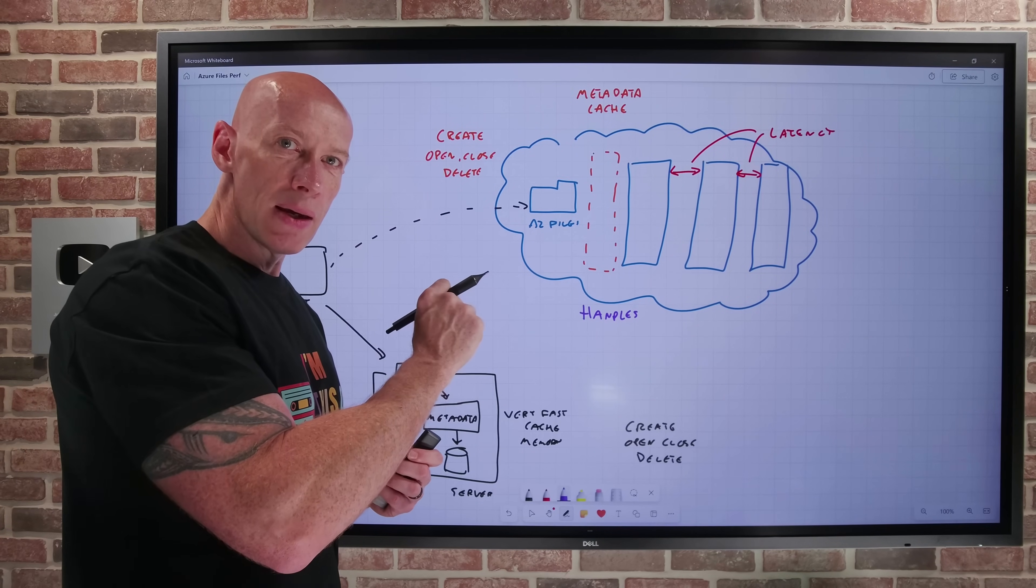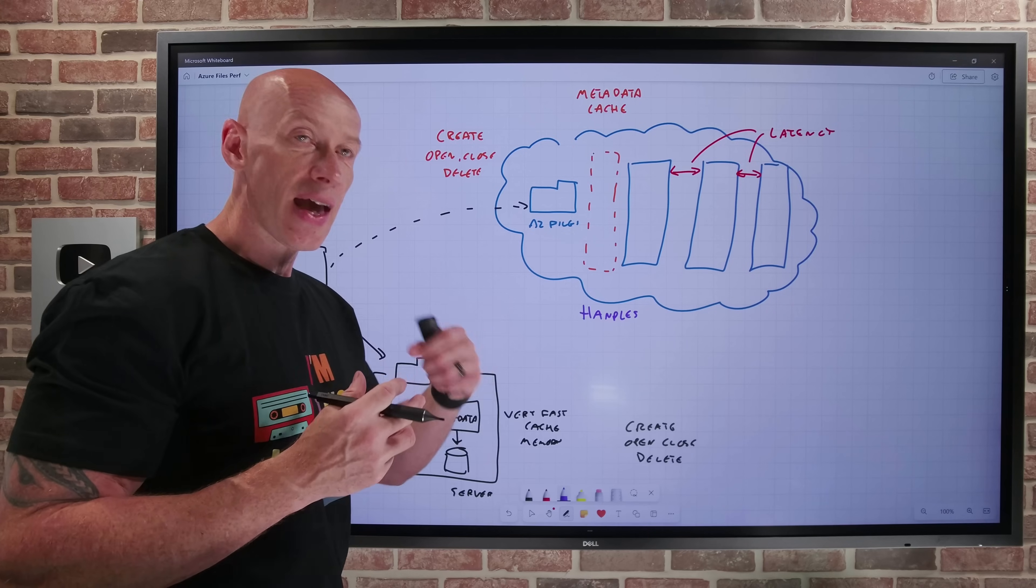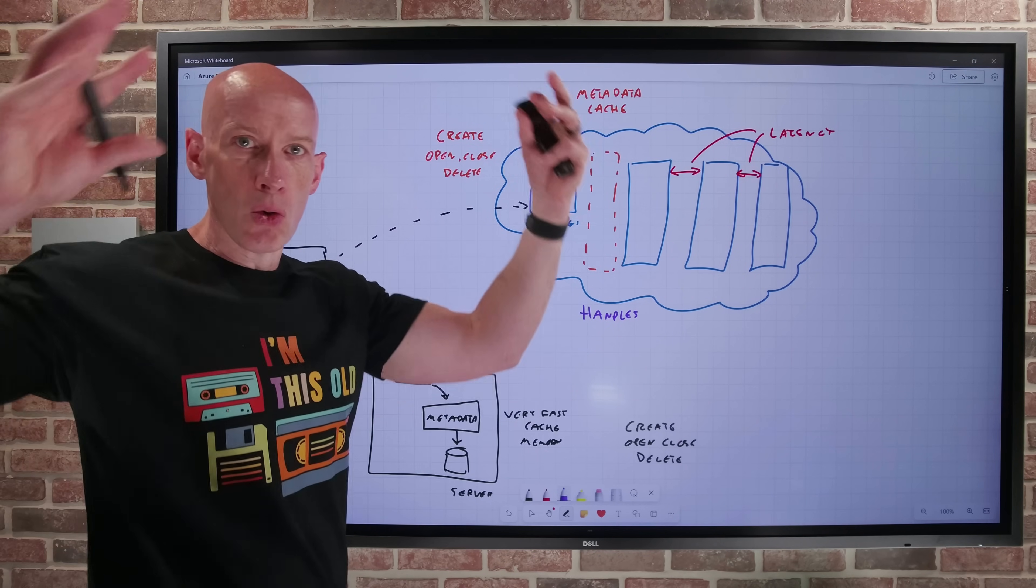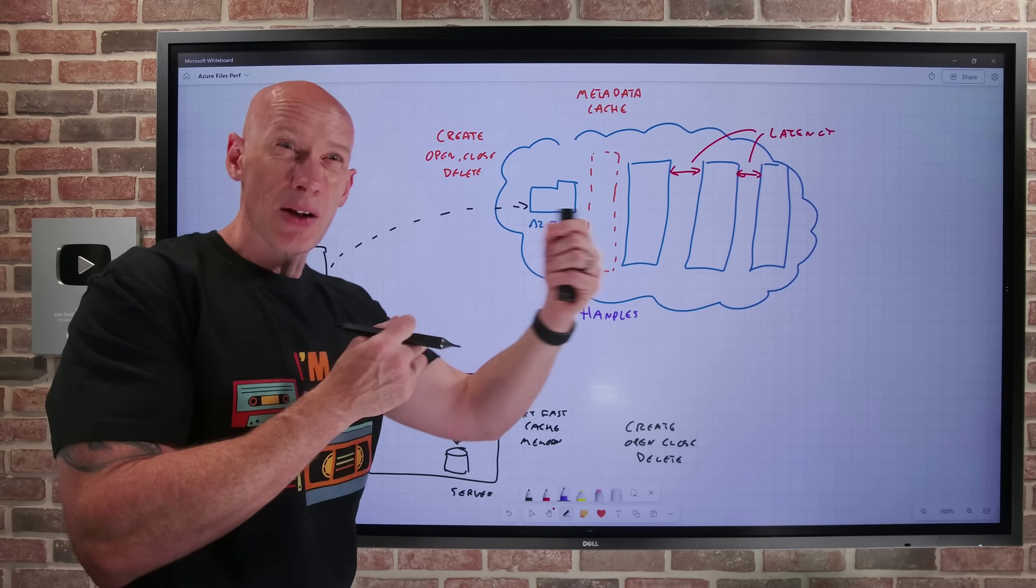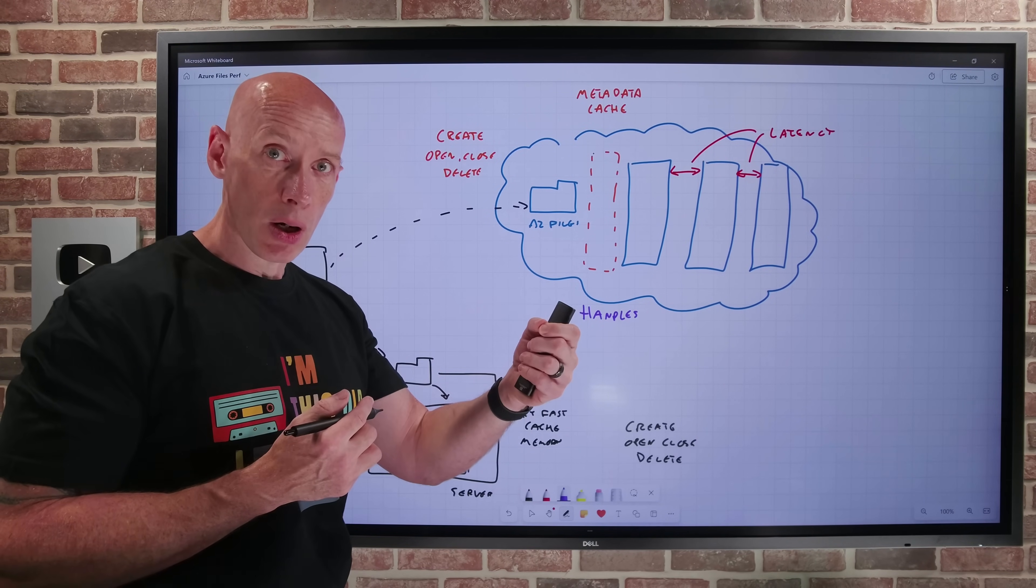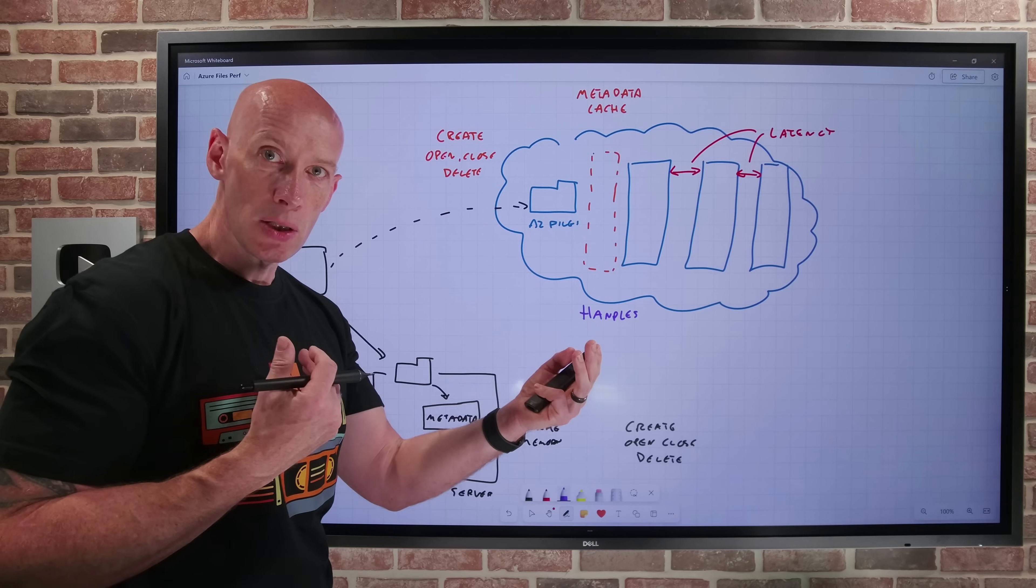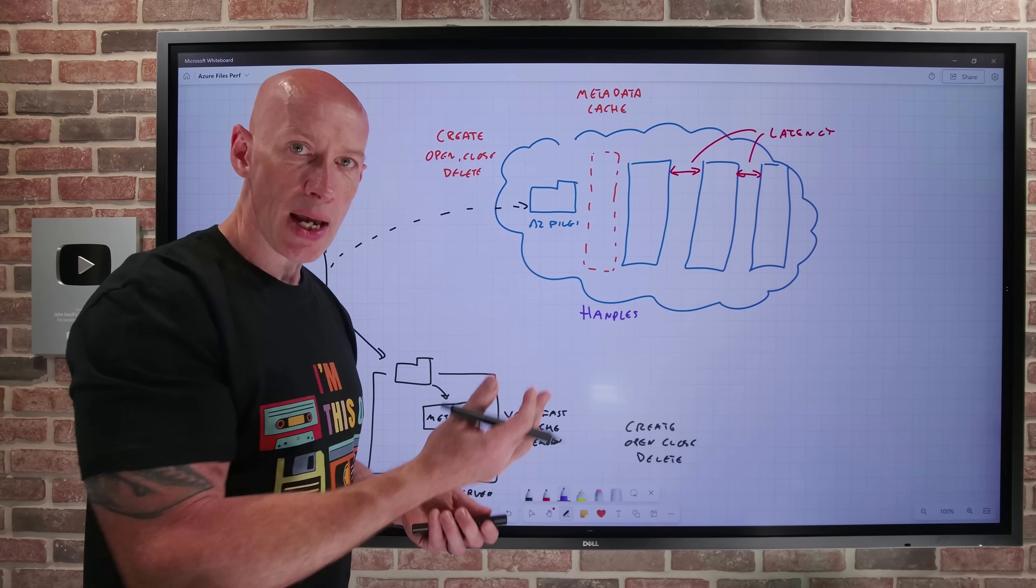Now the root handle limit is, well, how many workloads can actually go and have that handle to the root open at the same time? Now not every type of workload requires a handle on the root, which means you could handle way, way higher. Some workloads will just take a handle on the particular file or folder they're using. But if you did have a workload that required a handle on the root, you'd be limited to 10,000 concurrent connections of that workload on that particular Azure file share.